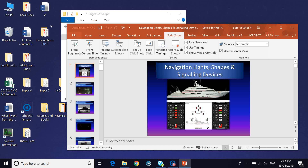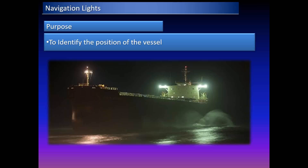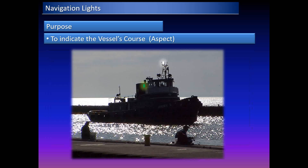We will be talking about the navigation lights on ships and the purpose of these signaling devices. The purposes of navigation lights include identifying the position of the vessel and indicating the vessel's course or aspect.